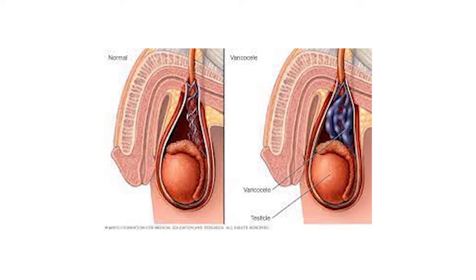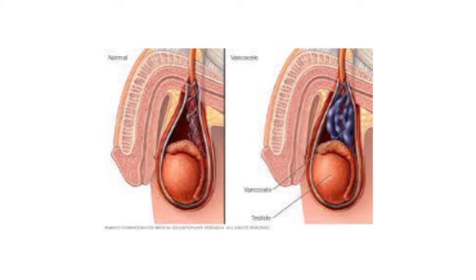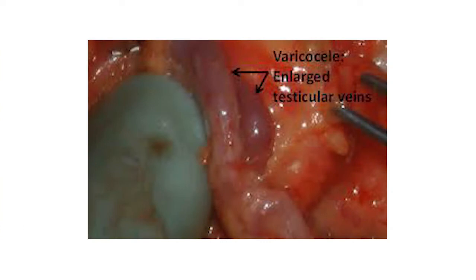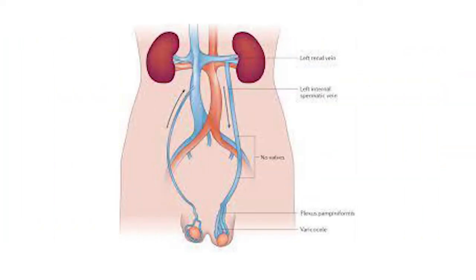Here is an image showing the pampiniform plexus veins elongated, tortuous, and dilated, clearly seen in the second image where the first image is normal. A second image shows the enlarged testicular vein in open operation, and another image anatomically illustrates why the left side is more prone to varicocele.